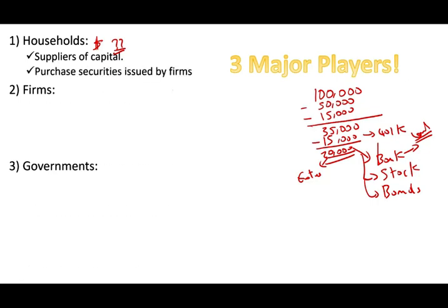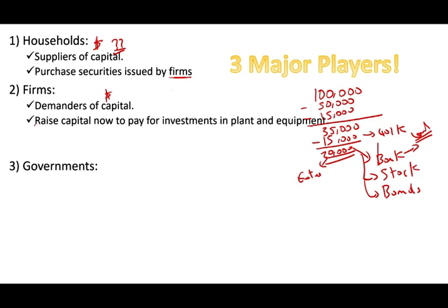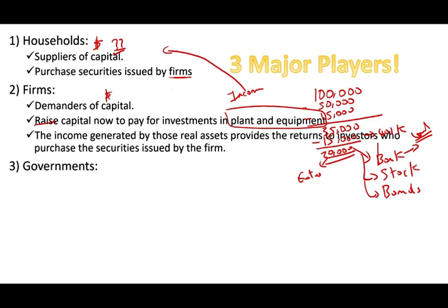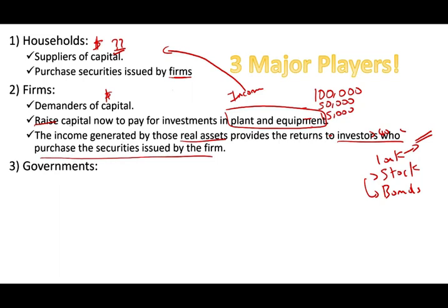Households supply money to the market by depositing it in the bank or by purchasing securities issued by firms. Firms are demanders of capital — they need money to expand, to buy property, plant, and equipment. They raise money to pay for those investments, which generate income. Some of that income is paid back to households in the form of profit, providing return to investors who purchased the firm's securities.